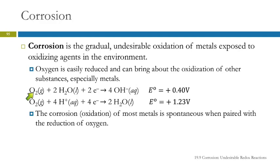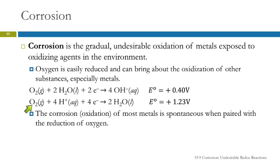There are two ways that can happen. We can have oxygen with water using two electrons and forming hydroxide — that has a standard potential of 0.4 volts. Or if there's acid present, oxygen in the presence of acid gives four electrons making water, and that's 1.23 volts.